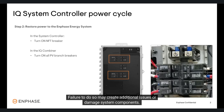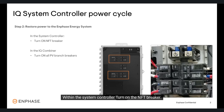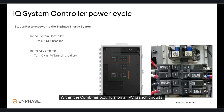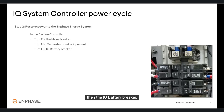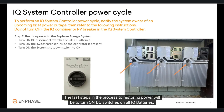Failure to do so may create additional issues or damage system components. Within the system controller, turn on the NFT breaker. Within the combiner box, turn on all PV branch circuits. Back in the system controller, turn on the mains breaker, followed by the generator breaker if present, and then the IQ battery breaker.